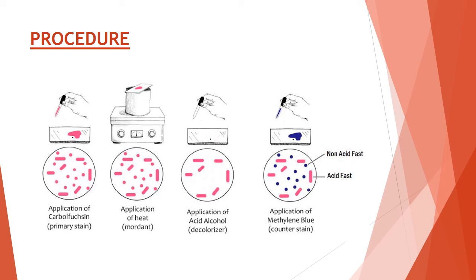For 20% sulfuric acid, wait for 1 minute and keep repeating this step until the slide appears light in color, then wash off with water. Pour methylene blue, wait for 2 minutes, and again wash with water. Allow it to dry and examine under oil immersion lens.